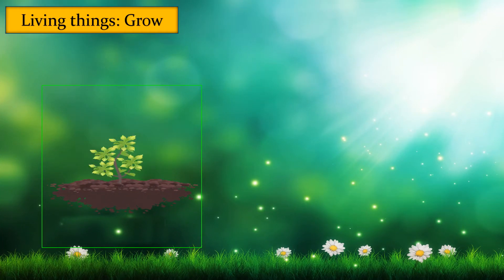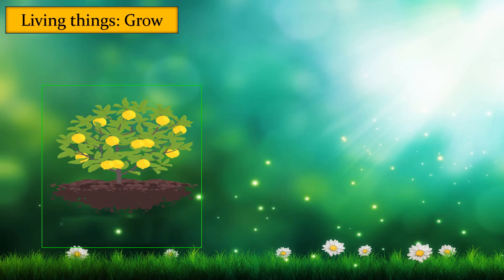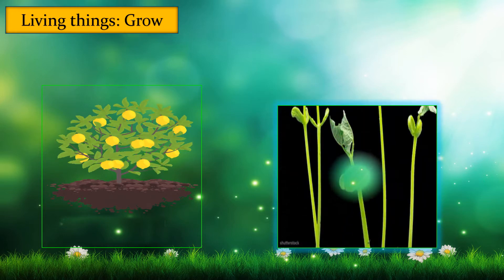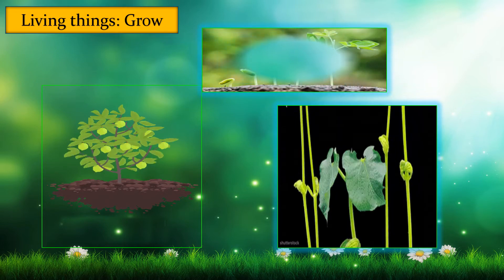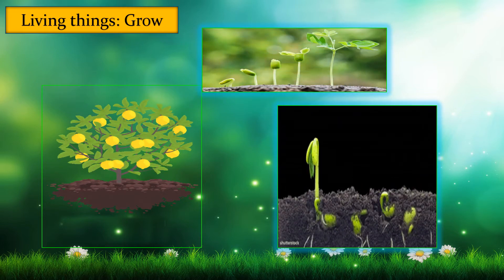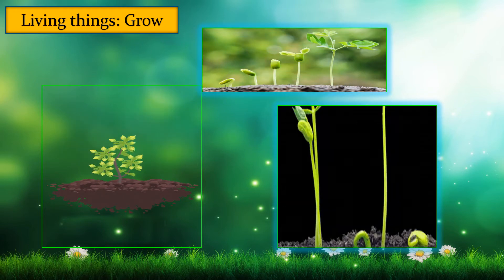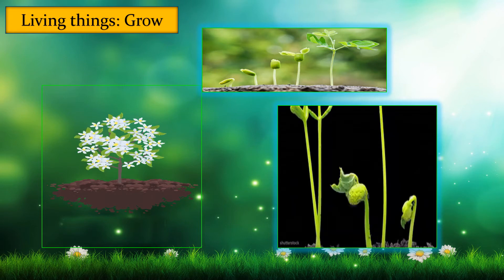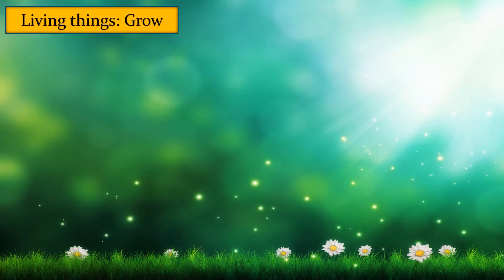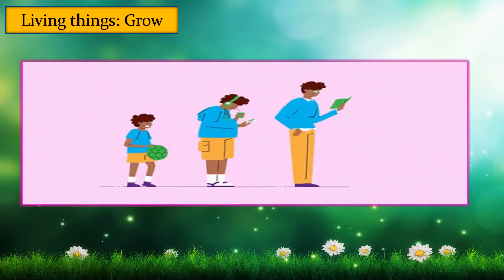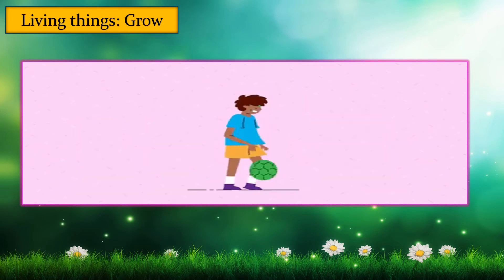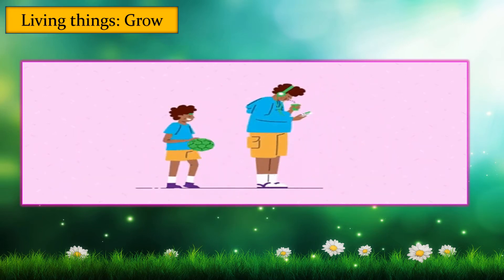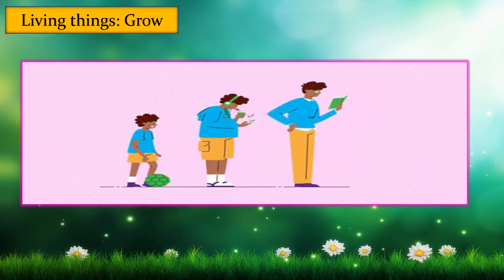Living things can grow. For example, a seed grows into a sapling, and then the sapling grows into a plant, and the plant grows into a big tree. A child grows into a boy, a boy grows into a man, and a man grows into an old man.